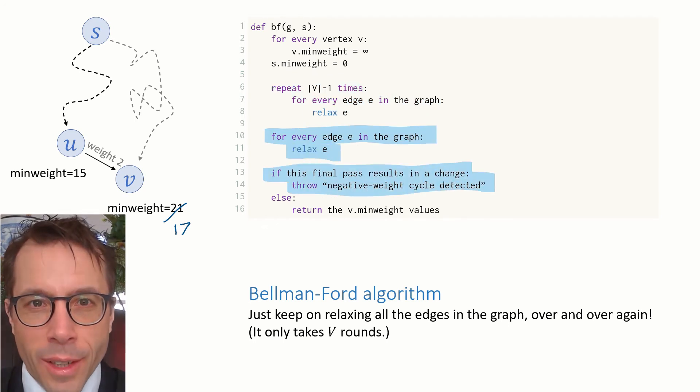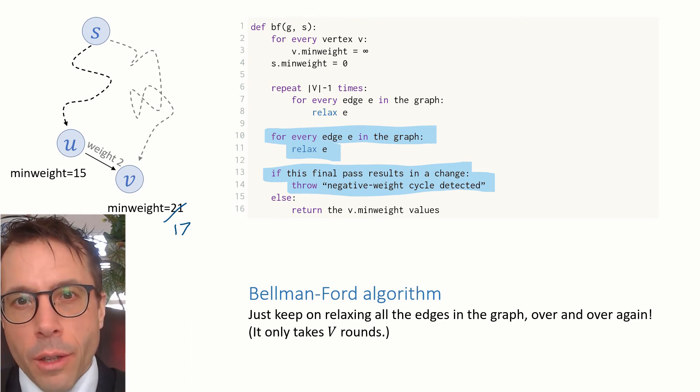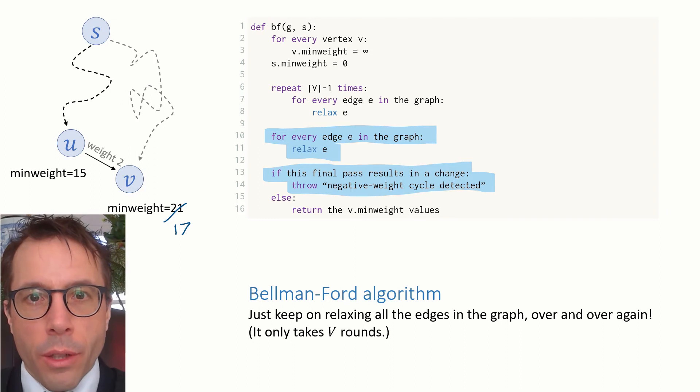Now, the clever bit. Do one more sweep of edge relaxation and ask, did this change any of the min weights? If it did, the algorithm says this graph has a cycle of negative weight, and if it doesn't, then it just returns the min weight values.